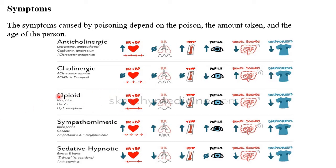Opioid poisoning symptoms include decreased heart rate, respiration rate, temperature, pupil size, bowel movement, and sweating. Depending on the signs and symptoms of the poisoned person, we can assess what type of poison the person has consumed.